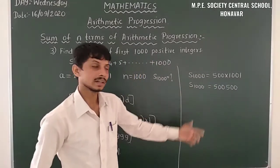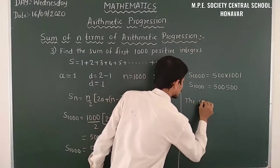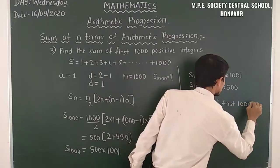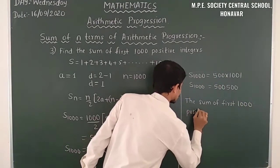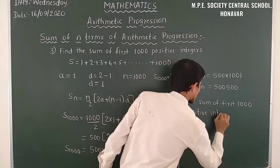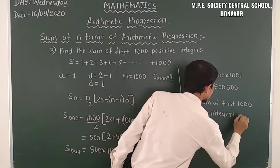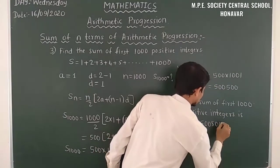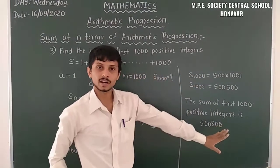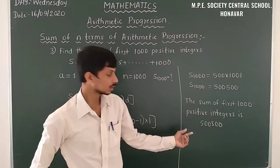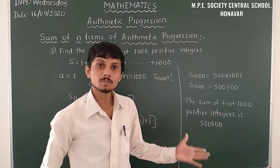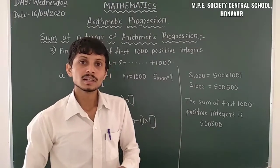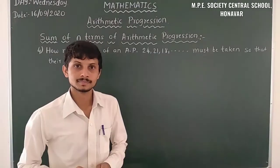The sum of the first 1000 positive integers is 500 × 1001 = 500500. Let us move on to the next problem.